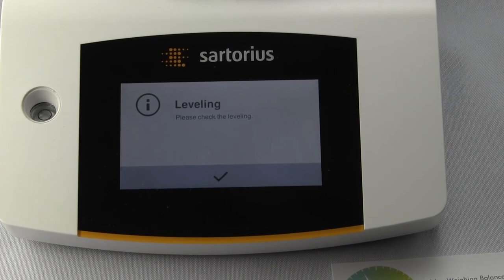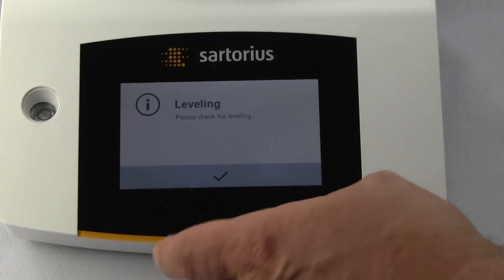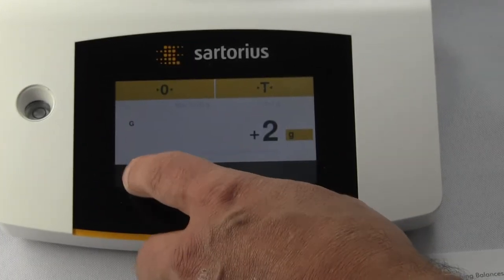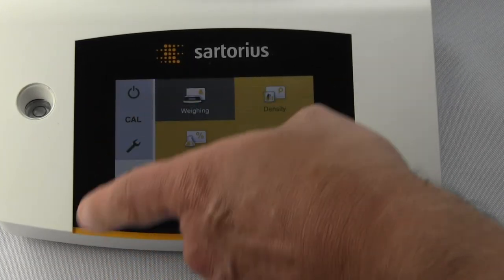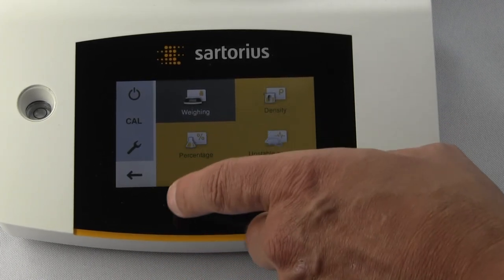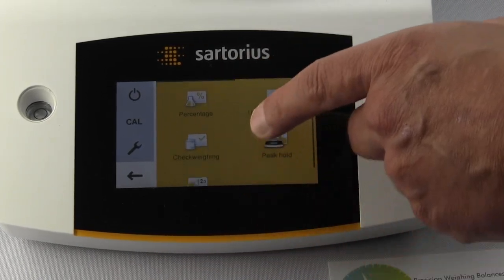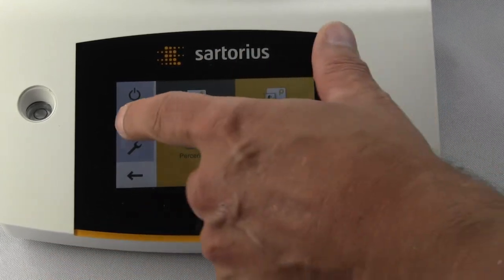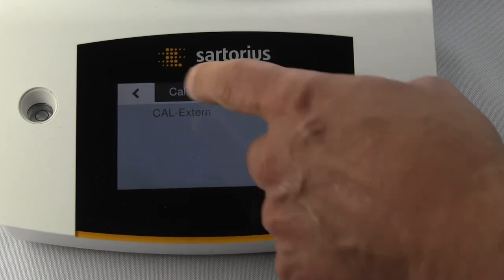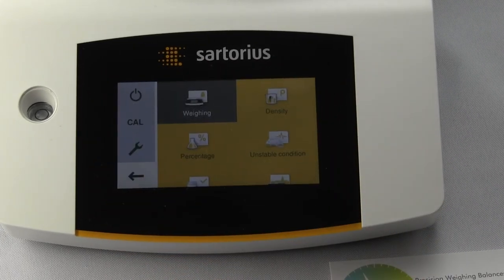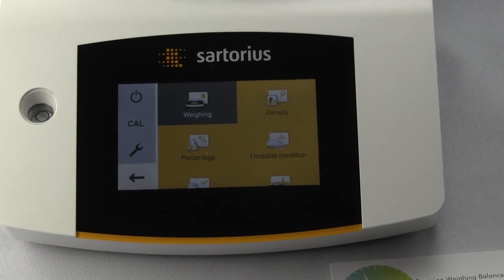Now that it's level you simply hit okay. I've made a couple videos regarding the menu—it's extremely intuitive, a nice touch screen display. If you want to get into calibration, you have your cal mode. It's external cal only, and I've made another video on that.